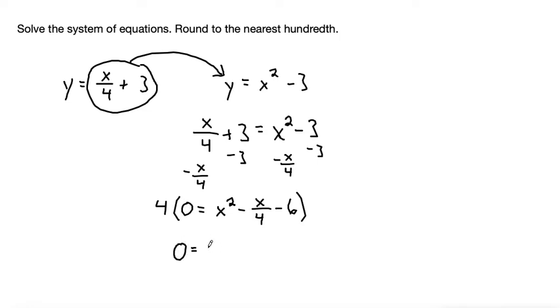4 times x squared is 4x squared. The 4 here and the 4 in the denominator cancel out, leaving that term with just minus x, and then 4 times negative 6 is negative 24.